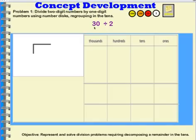Alright, so we're going to practice this with 30 divided by 2. First I'm going to represent 30 using disks in my place value chart. So 30 is three tens, so I'm going to show my three tens like this. Three tens is equal to 30.